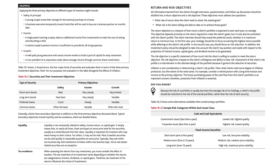Applying the three primary objectives to different types of investors: for safety of principle, a young couple invests their savings for the eventual purchase of a house, or a business executive temporarily invests funds to buy out a business partner six months later. For income, a single parent relies on additional income from investments to meet the cost of raising and educating a child, or a retired couple whose pension income is insufficient for all living expenses. For growth, a well-paid young executive wishes to build a pool of capital for early retirement, or a vice president seeks above-average returns through common share investments.